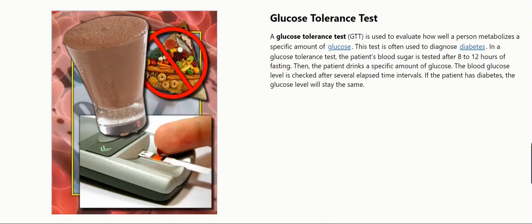Glucose tolerance test. A glucose tolerance test is used to evaluate how well a person metabolizes a specific amount of glucose. This test is often used to diagnose diabetes. The patient's blood sugar is tested after 8 to 12 hours of fasting, then the patient drinks a specific amount of glucose. The blood glucose level is checked after several elapsed time intervals. If the patient has diabetes, the glucose level will stay the same.